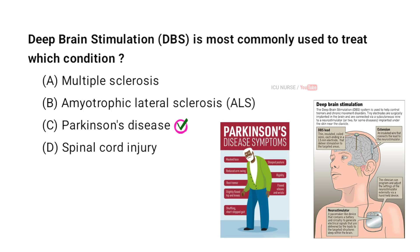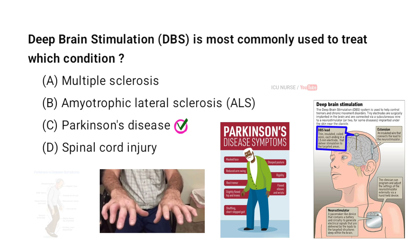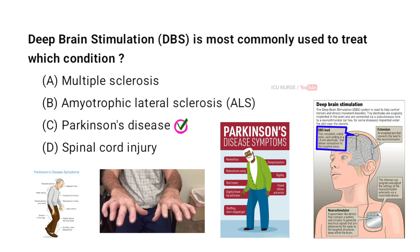Deep Brain Stimulation (DBS) uses implanted electrodes to deliver electrical impulses to specific brain areas. These impulses disrupt abnormal activity, helping normalize movement control and reducing symptoms like tremors and stiffness. DBS improves quality of life but does not cure Parkinson's disease.